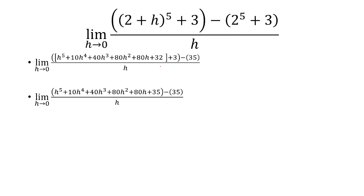Now we can simplify. 32 plus 3 is 35, so now we just have this one long expression. The next step, 35's are going to cancel,